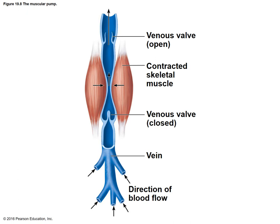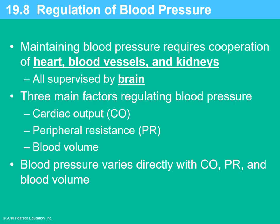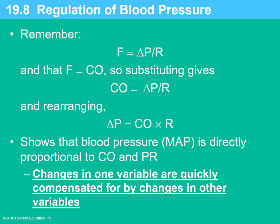This diagram shows the milking action of the skeletal muscles and the valves. It's a coordinated effort to keep blood flowing and maintain appropriate blood pressure levels. This is a cooperation between the heart, the blood vessels, and the kidneys, with the brain controlling it all. Three main factors regulate blood pressure: cardiac output, peripheral resistance, and blood volume.